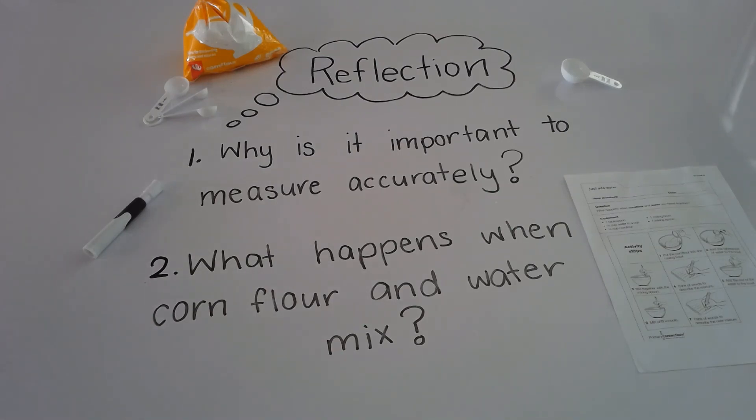So the first question for your reflection is, why is it important to measure accurately? Now, accurately is the key word there. Why is it important to measure it accurately? And the second question is, what happens when corn flour and water mix? So that was actually the experiment. What actually does happen when we mix the corn flour and the water? And you could answer that in different stages. What happens when we add a little bit of water? And what happens when we add a lot of water?